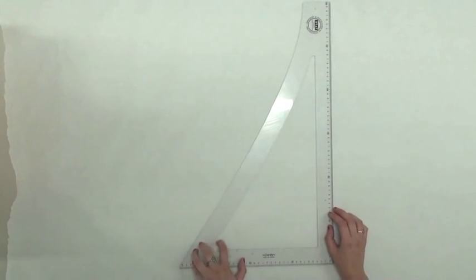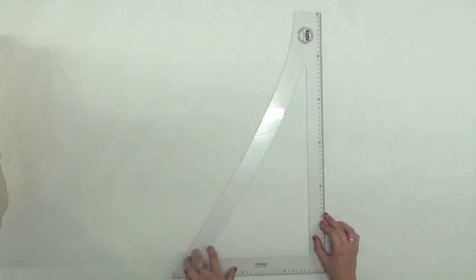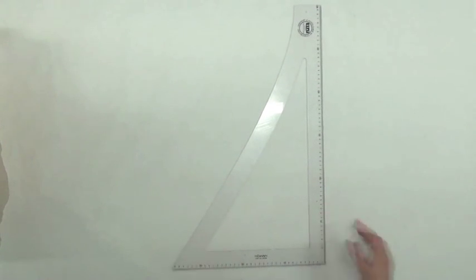This video is the first in the series about how to use the pattern making rulers, the first being the set square within your ruler set.